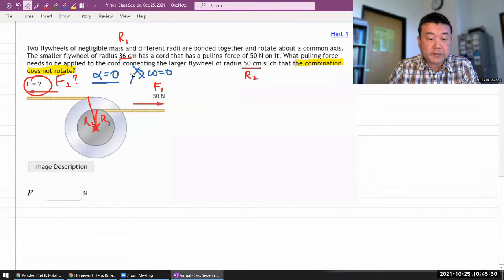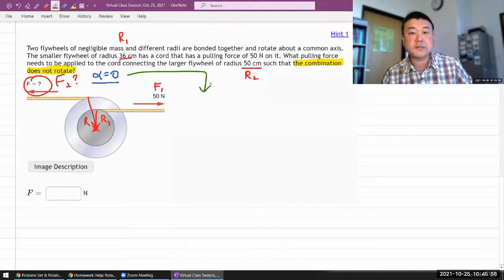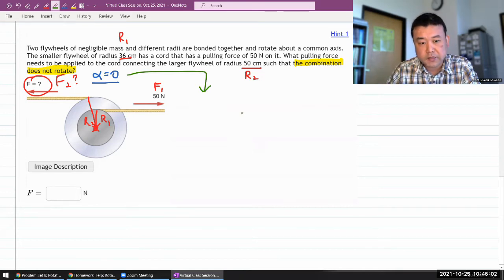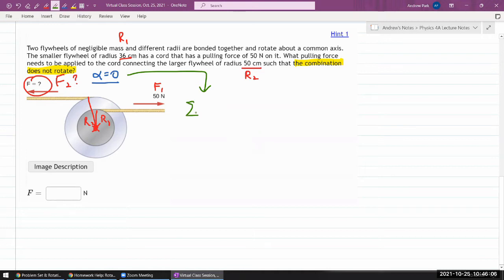So what is important here is that angular acceleration is zero. And given that we can set up this Newton's second law equation. So this is the rotational version of Newton's second law, the net torque is equal to rotational inertia times angular acceleration. So for this question, we want to set angular acceleration equal to zero. So we say this right hand side is going to equal zero.